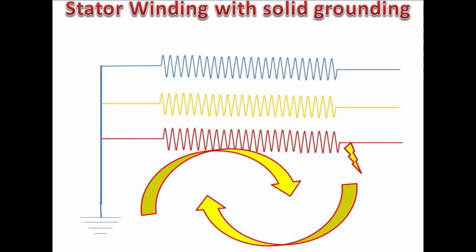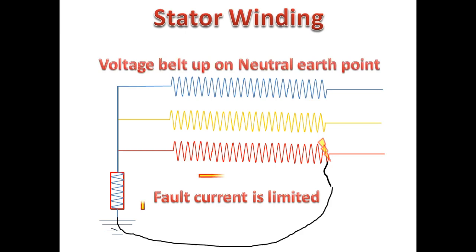If there is no current limiter, there will be heavy current flowing, but there will also be a heavy voltage drop. Since we have a current limiter, it reduces heavy current but we have almost the same potential of the phase over the earth point.